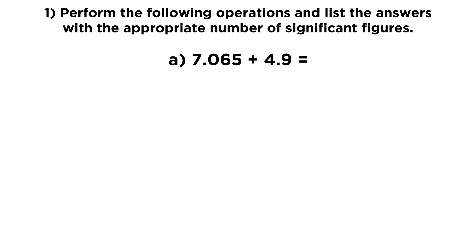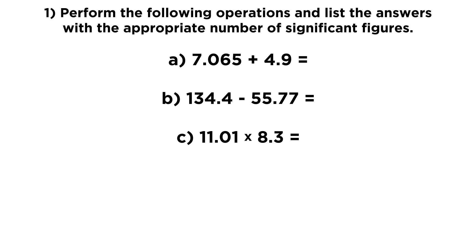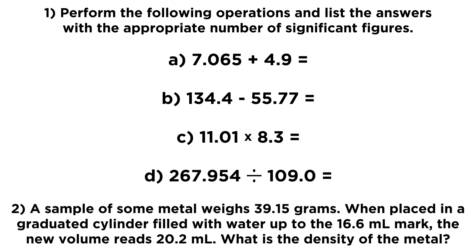We have an addition, a subtraction, a multiplication, and a division. Then we have another question: a sample of some metal weighs 39.15 grams. When placed in a graduated cylinder filled with water up to the 16.6 milliliter mark, the new volume reads 20.2 milliliters. What is the density of the metal? This all has to do with significant figures — check out the tutorial on this topic before moving forward, and then give these questions a try.